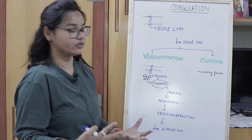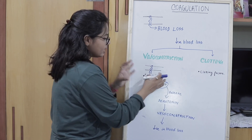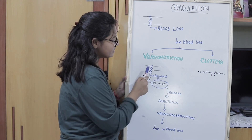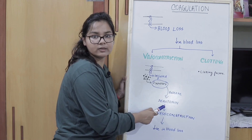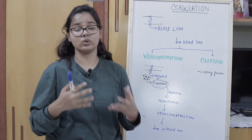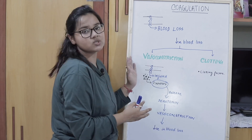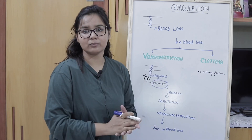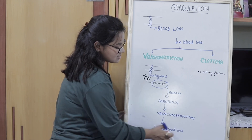Suppose there is an injured blood vessel. When the injury has occurred, the cells which first reach the site of injury are the platelets. These platelets will then release what is called serotonin. This serotonin causes vasoconstriction, and when there is vasoconstriction, the blood loss will be decreased. This is an immediate mechanism — the platelets come to the site, release serotonin, cause vasoconstriction, and this decreases blood loss.